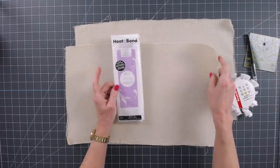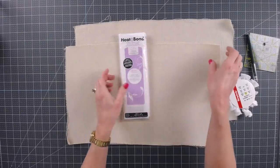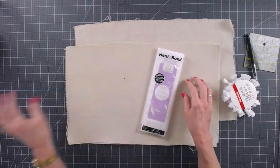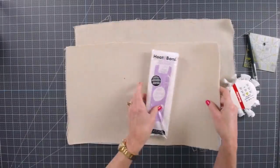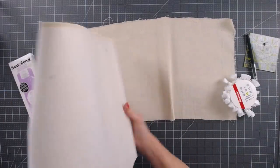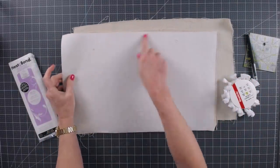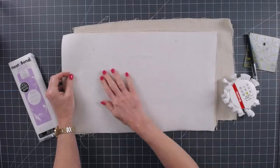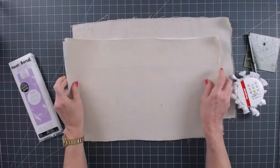Now I've gone ahead and cut out a piece of the interfacing that is approximately the same size as my outer fabric. Again, if you're doing two separate patterns, you want to make sure you apply the interfacing to the back side of your outer fabric. So I went ahead and cut a piece approximately 12 by 20 and I fuse that with a hot iron to the back of my outer fabric for the bag.